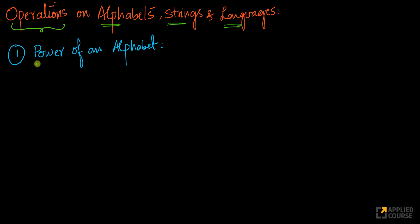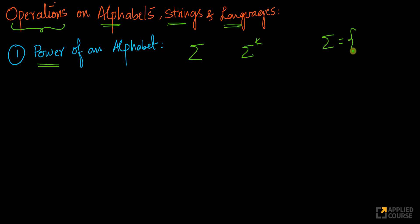The first concept is called the power of an alphabet. Imagine if you're given an alphabet, let's say sigma. What does raising this to a power basically mean? If I write sigma power k, what does this mean? We'll use the binary language as a simple example because it has only two symbols, 0 and 1.